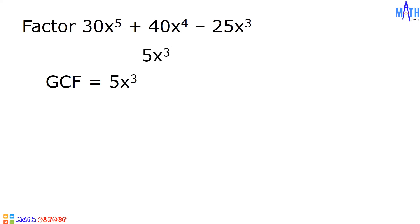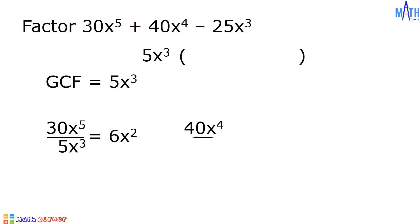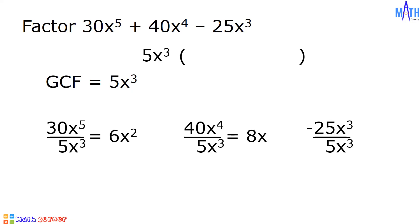Let us factor out 5x cubed and let us determine the other factor. 30x raised to 5 divided by 5x cubed is equal to 6x squared. 40x raised to 4 divided by 5x cubed is equal to 8x. And negative 25x cubed divided by 5x cubed is equal to negative 5. And the other factor is 6x squared plus 8x minus 5. It means that 30x raised to 5 plus 40x raised to 4 minus 25x cubed is equal to 5x cubed times the quantity 6x squared plus 8x minus 5.